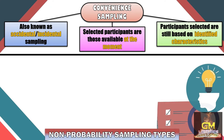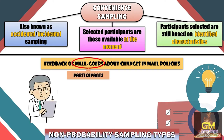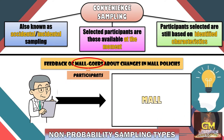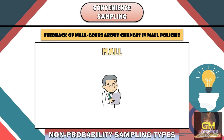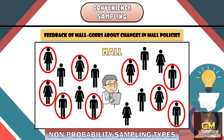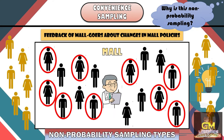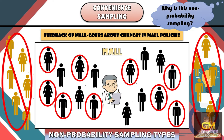With this in mind, let's consider this example wherein we have a study that aims to determine the feedback of mall-goers about the changes in the mall policies. From this example, we're able to identify that the participants are the different mall-goers. As such, the researcher would conduct the research inside the mall, which would be considered as the research setting. Once inside the mall, the researcher would then identify different people who could become part of the study. This is considered non-probability sampling because those inside the mall are only considered to become part of the study, whereas those outside would not have the same opportunity to become part of the research.